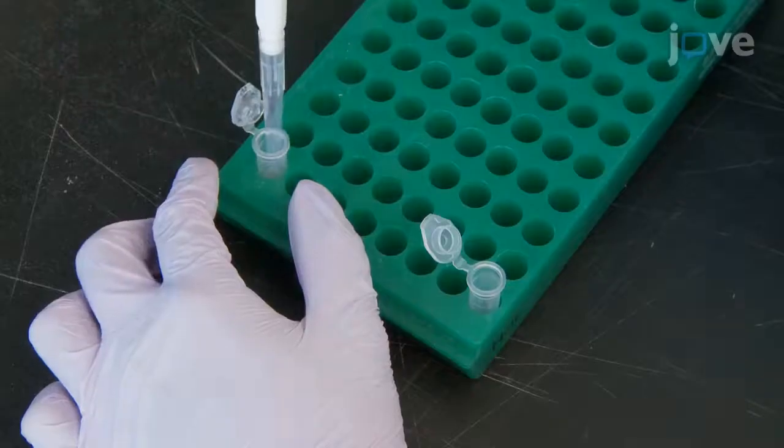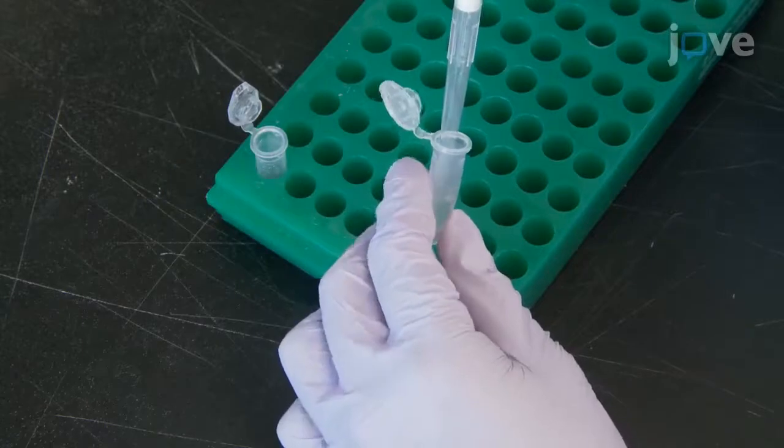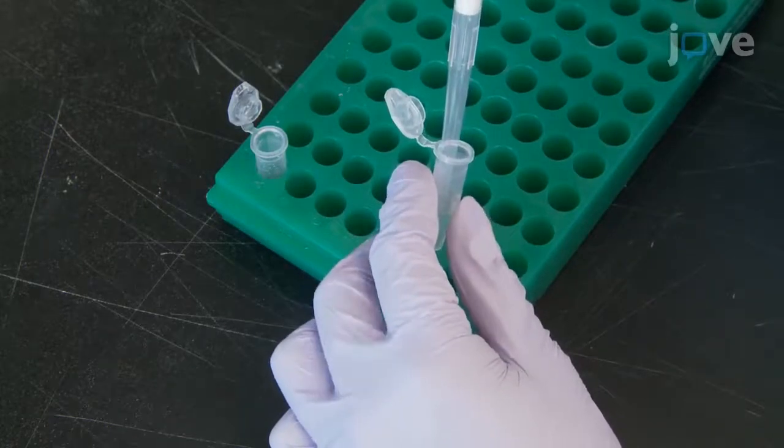After this, transfer 500 mL of the apoptotic cell and PBS suspension to the tube containing DMSO and NHS biotin.